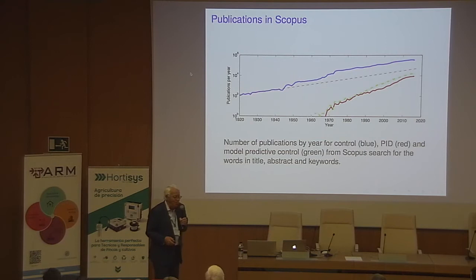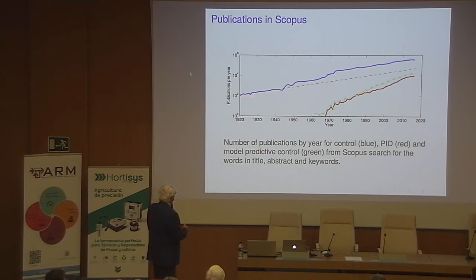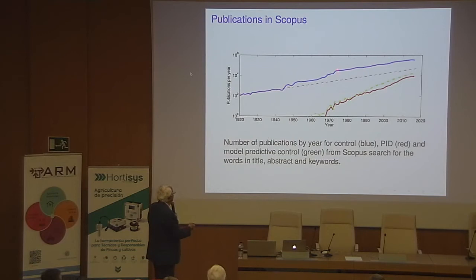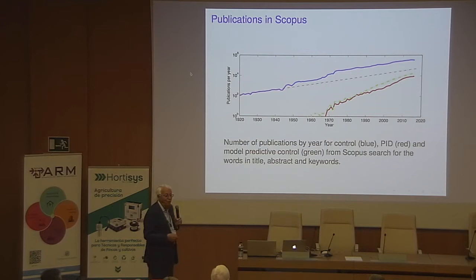Looking at the academic view: I went to Scopus and looked for papers with 'control' in title, abstract, and keywords — the blue line. This is how control developed on a logarithmic scale. There was what I call the golden age from 1960 to 1970 — a dramatic increase due to the space race and putting computers to use for control. I also plotted papers mentioning PID — the red curve — and papers mentioning MPC — the green curve. MPC and PID are rising at about the same rate, and the growth rate is more rapid than papers on control generally.